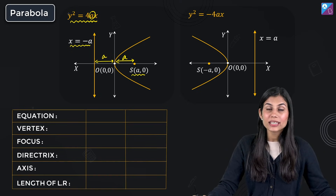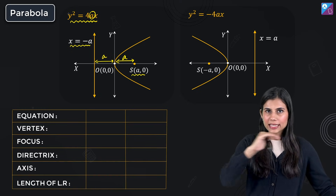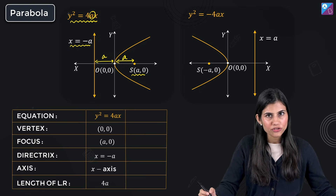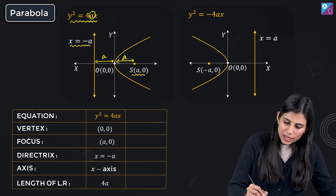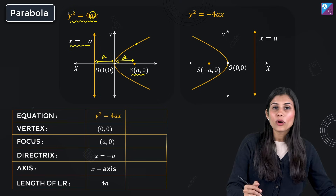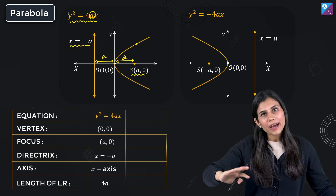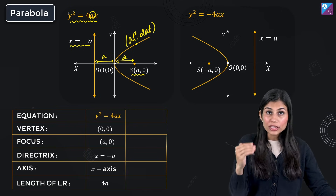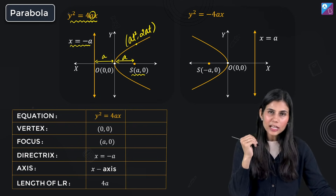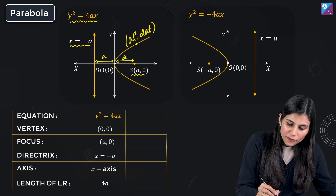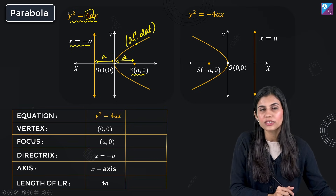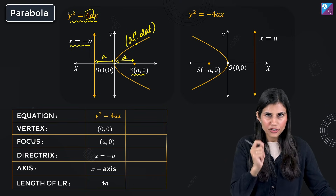The parabola is symmetric about the x-axis, so the x-axis is its axis of symmetry. Any point sitting on the parabola has parametric coordinates (at², 2at) where t is a real parameter. The quantity 4a, which is the coefficient of x in the equation, represents the length of the latus rectum.